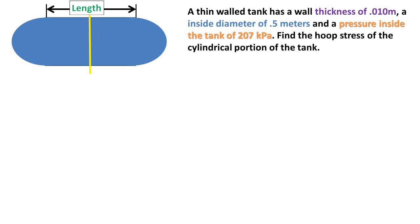In this problem, we have a thin-walled pressure vessel that has a wall thickness of 0.01 meters, an inside diameter of 0.5 meters, and a pressure inside the pressure vessel of 207 kilopascals. We want to find out what the hoop stress of the cylindrical portion of the pressure vessel is.